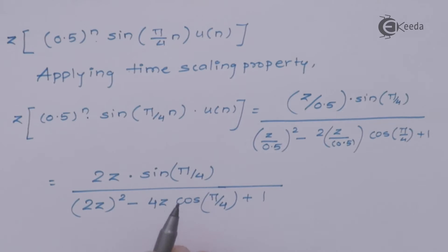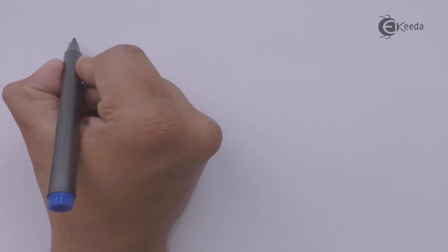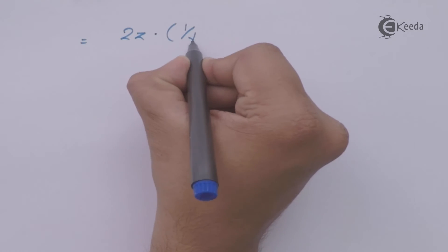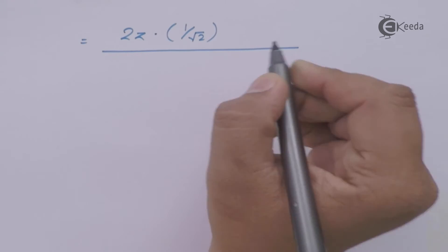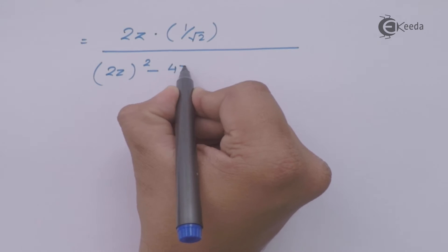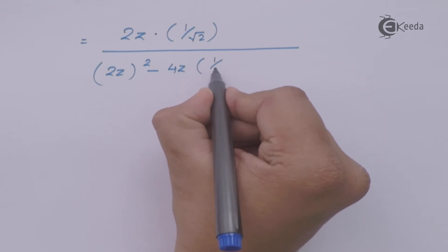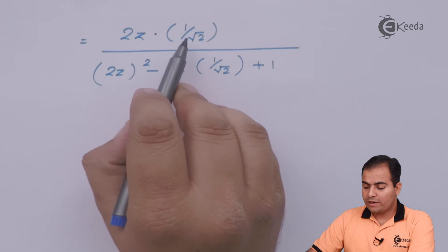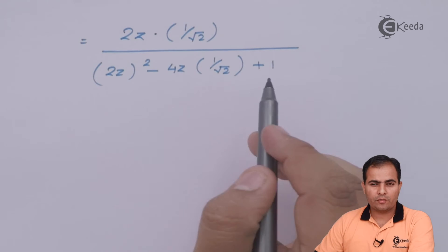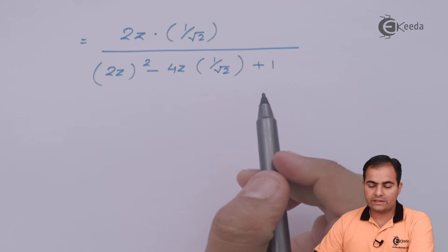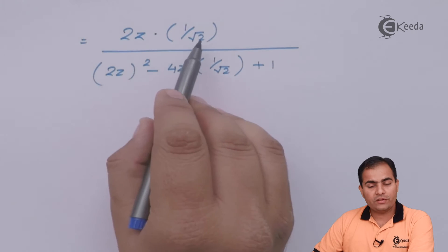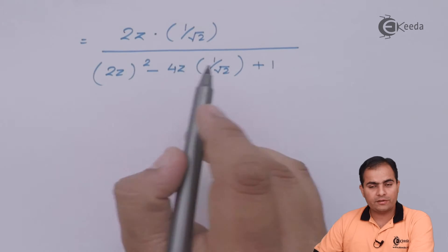Now we will substitute sin(π/4) and cos(π/4) values in this equation. What is the formula for sin(π/4) and cos(π/4)? It is 0.707 or 1/√2. Sin(π/4) value is 1/√2 and cos(π/4) value is also 1/√2, which is 0.707. So simply multiply 2 with 0.707 as well as 4 with 0.707.